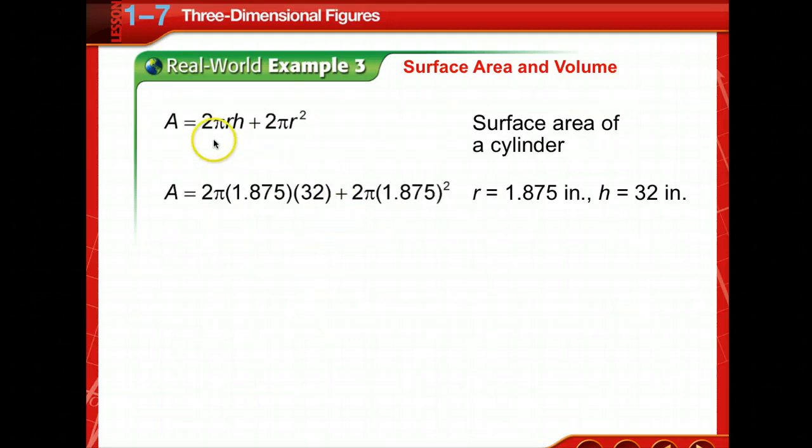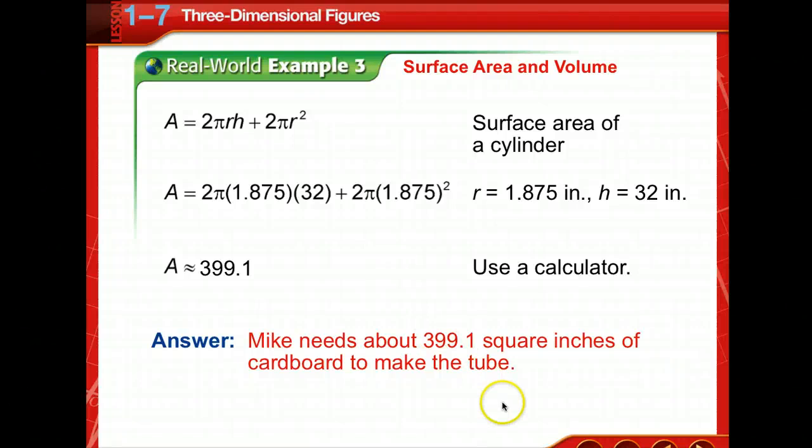The amount of material used to make the tube would be equivalent to the surface area of the cylinder. Let's change feet to inches. The formula for the surface area of the cylinder is 2 pi r h plus 2 pi r squared. To find the radius, I took that 3 3/4, which is 3.75 diameter, and divided it in 2. That's how you get 1.875. We're told the height is 2 2/3 feet. That changes to 32 inches because 2 2/3 is 8/3 times 12 over 1 gives us 32 inches. So the area is approximately 399 1/10. He needs about 399 1/10 square inches of cardboard to make the tube.